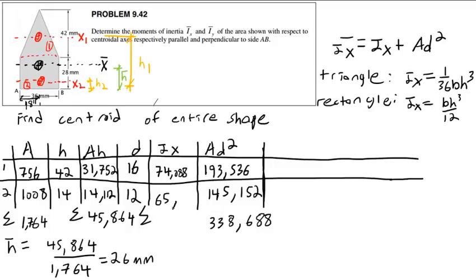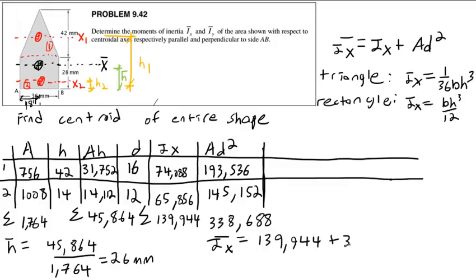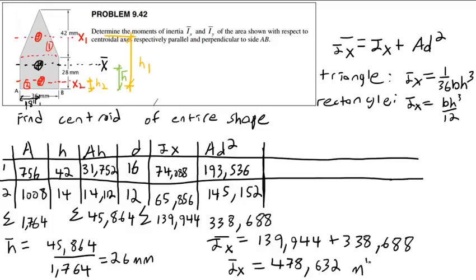The actual I_x values sum to 65,856 plus 74,088 equals 139,944. The AD squared column sums to 338,688. The overall I_x-bar is 139,944 plus 338,688, which equals 478,632 millimeters to the fourth. That is the moment of inertia of this shape about the combined centroid.